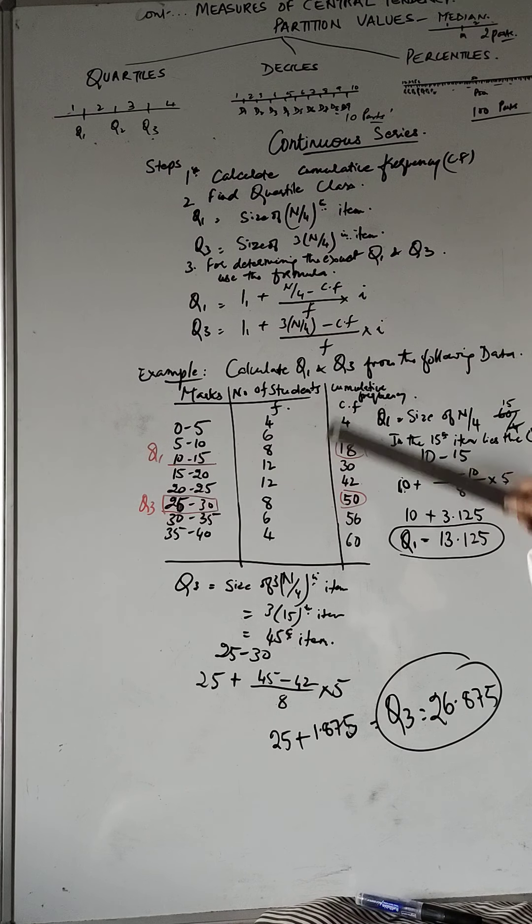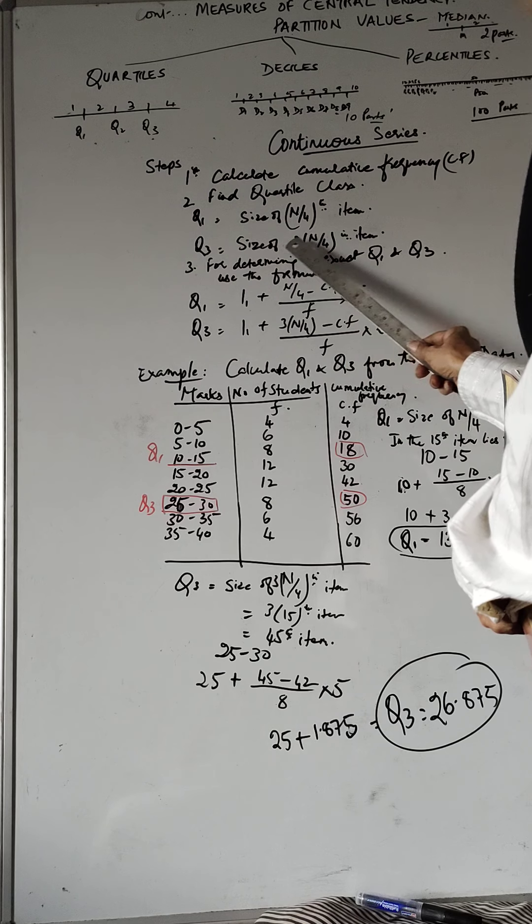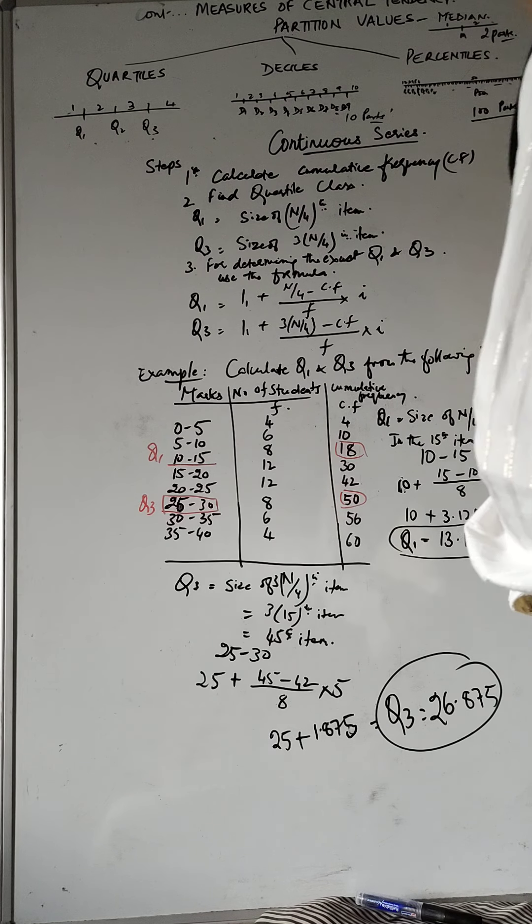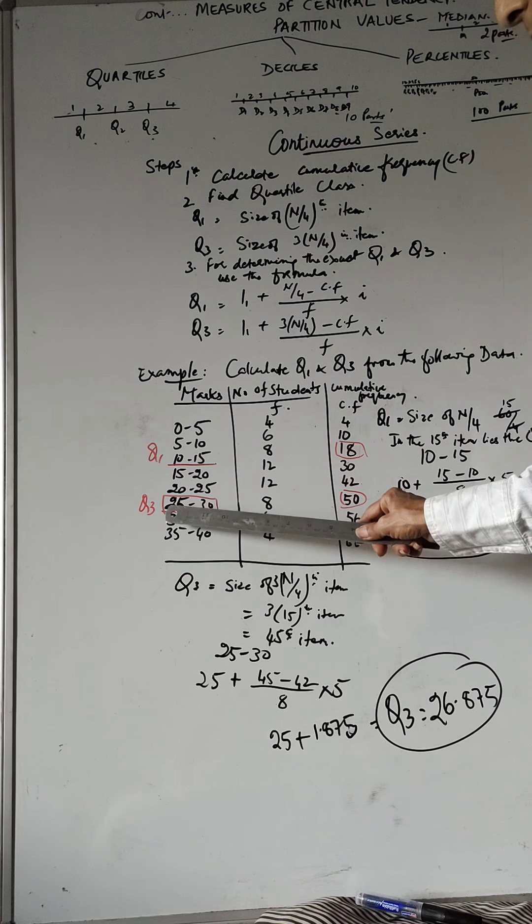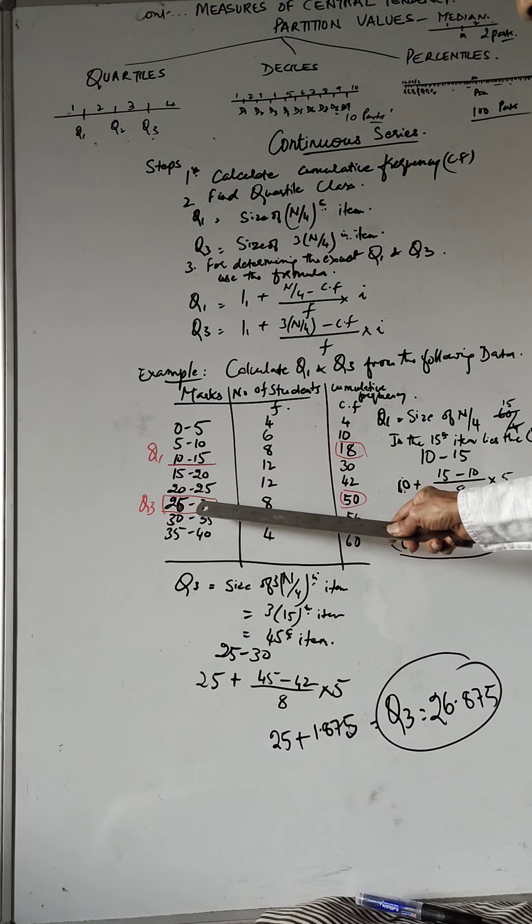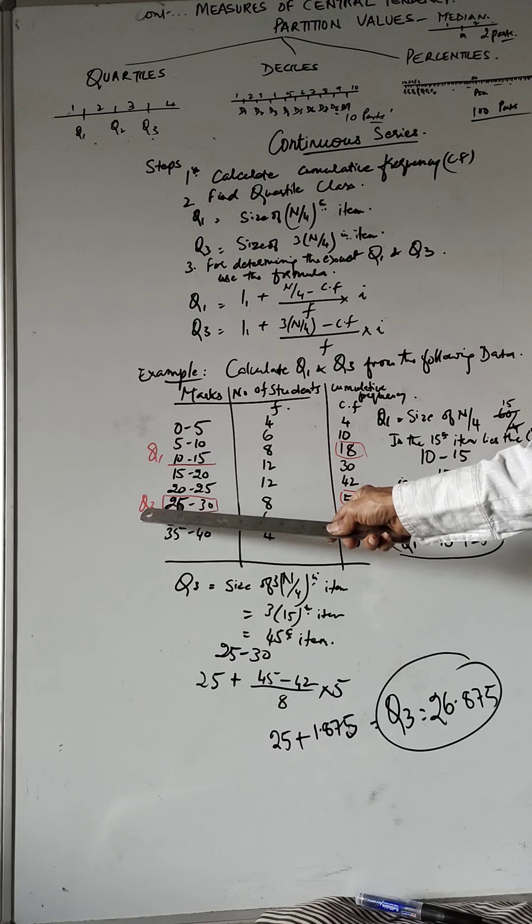So Q3 is the size of 3 into n by 4th item. We've already worked out n by 4 is 15, that is 60 divided by 4. Into 3, what do you get? So 3 into 15th item is 45th item. So now let's take the 45th item. Where does it lie in the cumulative frequency? In 50. So the 45th item lies in 50. Now corresponding to that, the class interval is 25 to 30. Within this range, we will get what is known as the upper quartile or Q3.